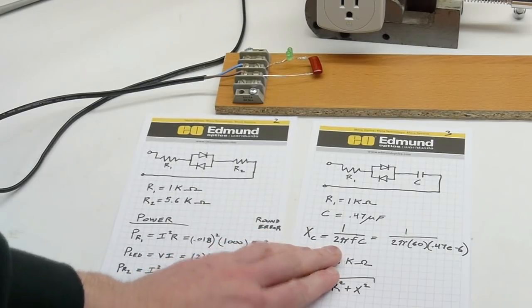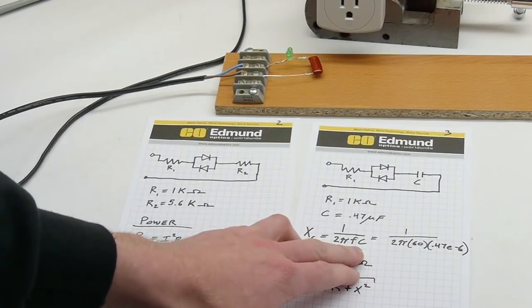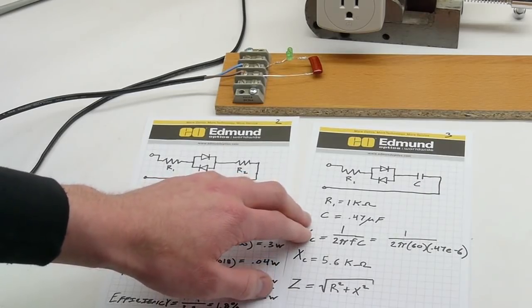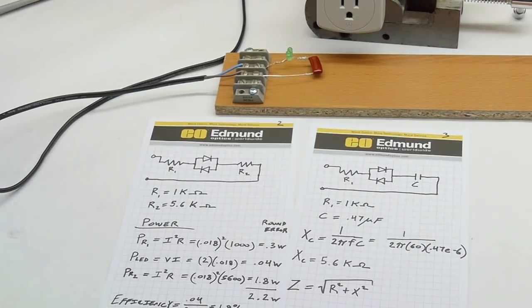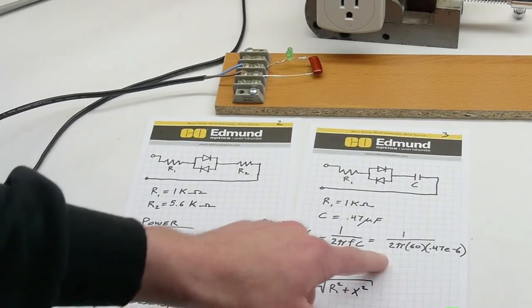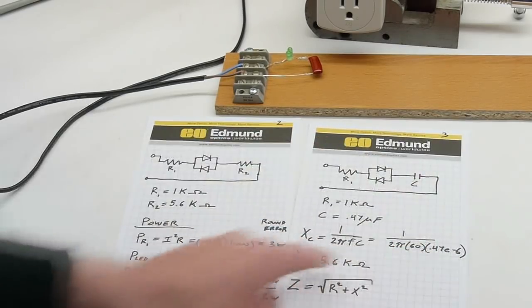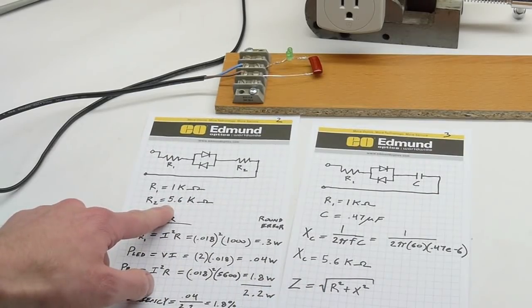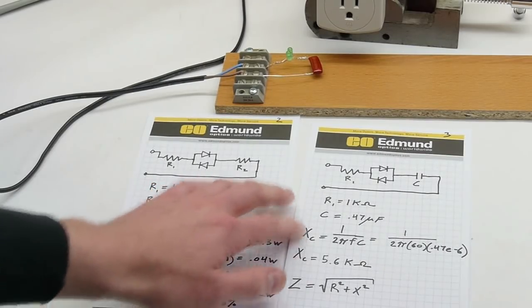We use this formula right here. 1 over 2 pi times the frequency in hertz times the capacitance in farads. So this capacitor is 0.47 microfarads. And the frequency is 60 hertz because I'm in the United States and all the line power is 60 hertz here. So 1 over 2 pi times 60 times 0.47 times 10 to the negative 6. And if you calculate this all out, you get 5.6 kilo ohms, just like in the first circuit.